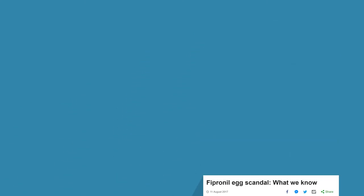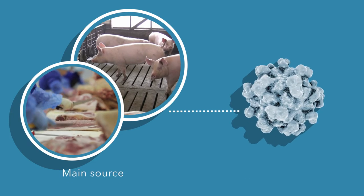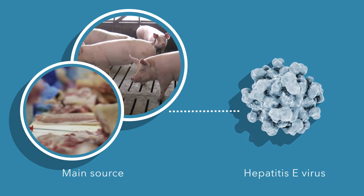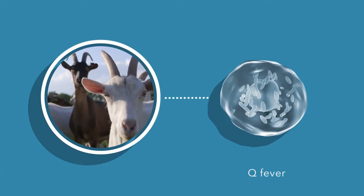Another example is the rise in hepatitis E infections from pigs and pork. This has been identified as an emerging risk, but as with Q fever in goats, it appears to be difficult to get a good grasp of the problem.